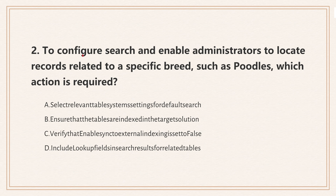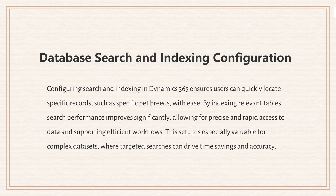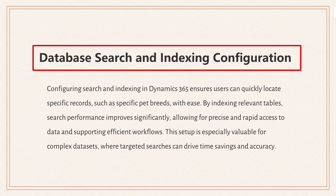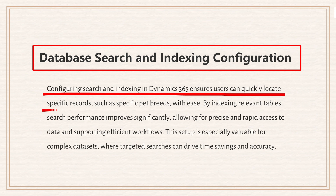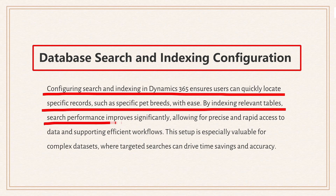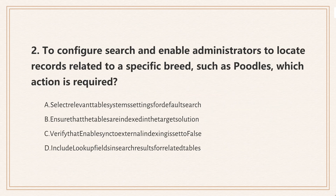Question 2: To configure search and enable administrators to locate records related to a specific breed such as poodles, which action is required? The knowledge point is database search and indexing configuration. Setting up search and indexing in Dynamics 365 makes it easy for users to find specific records like a certain pet breed. Index tables ensure faster, more accurate searches, keeping workflows smooth. The correct answer is ensuring that tables are indexed so records are easier to find — indexing speeds up search, helping users quickly locate specific breeds or details.